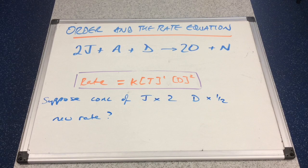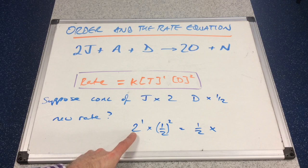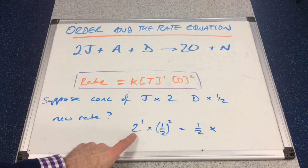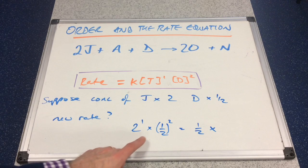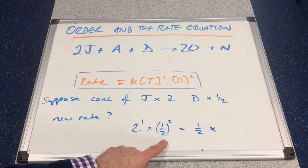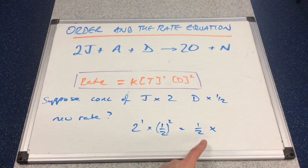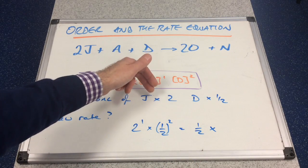Now a trickier example: suppose the concentration of J was doubled but the concentration of D was halved — what would the new rate be? If we double J, we raise 2 to the power 1, giving a 2-fold increase. But if D is halved, we square the factor: one-half squared gives a quarter. So we have 2 times a quarter, which is one-half. The new rate would actually be half the original rate.